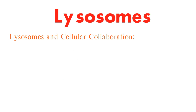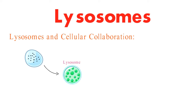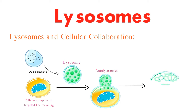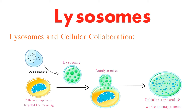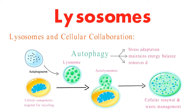Let's delve into how lysosomes collaborate with endosomes and autophagosomes. Endosomes transport materials to lysosomes for degradation, while autophagosomes encapsulate cellular components targeted for recycling. Through fusion, lysosomes merge with autophagosomes, resulting in autolysosomes where contents are broken down by enzymes. This whole process is known as autophagy. It aids stress adaptation, maintains energy balance, and removes dysfunctional components, making it a key player in cellular health.